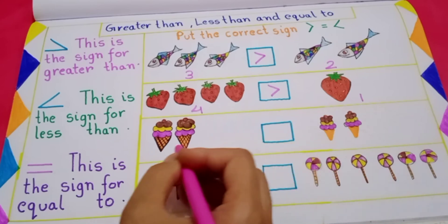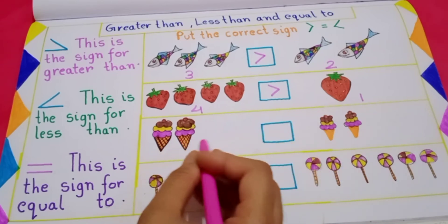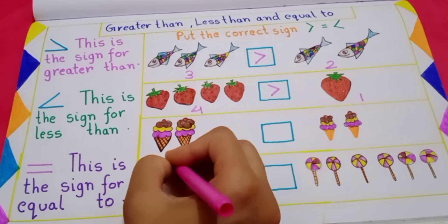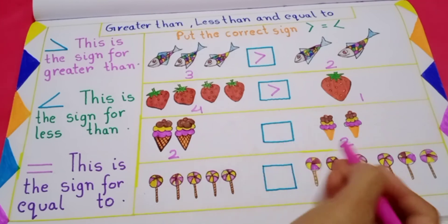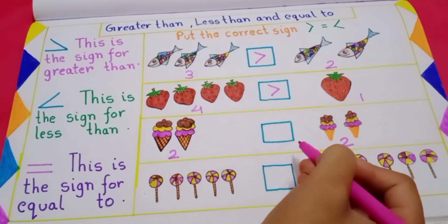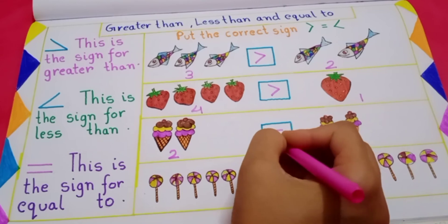Now next, here how many ice creams? 1, 2. 2 ice creams. And here, 1, 2, 2 ice creams. 2, 2. Both are equal, right. Both are equal. So put equal to sign.